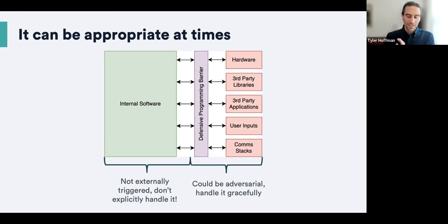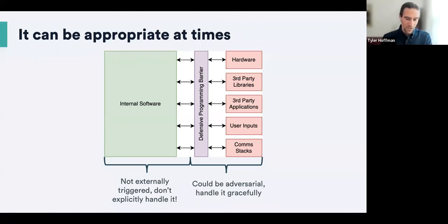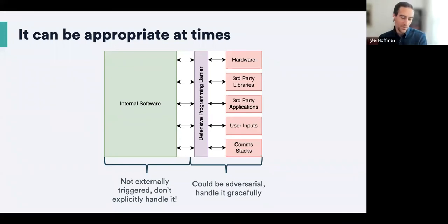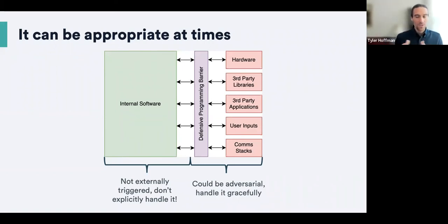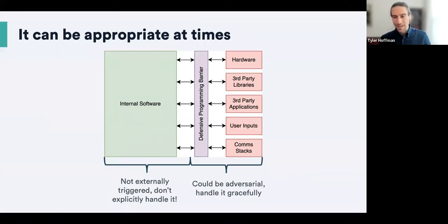User inputs and what's happening over your comm stacks — whether intentional or not — could crash your system due to bad input. You need to validate and return errors when these things try to give you invalid input. It could also be adversarial — a security researcher or a malicious client trying to inject data into your system. You need to validate input on that defensive programming barrier, and you should not crash due to bad input.